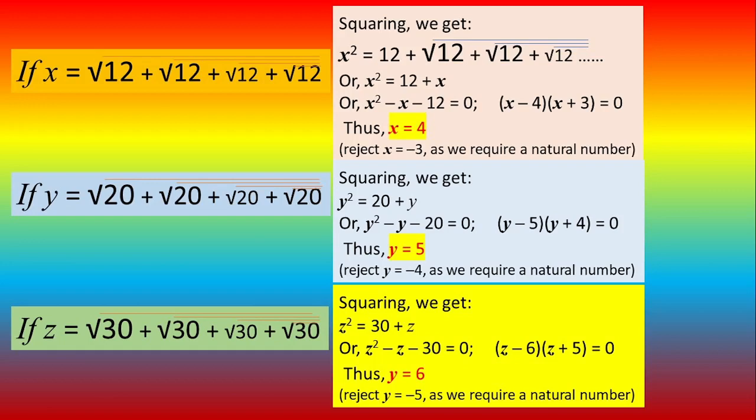So this is the trick for doing this sum. 12 broken into 3 into 4, the larger number 4 is taken if the sign is plus and the smaller number will be taken if the sign is minus. 20 is 4 into 5, we take the larger number because the sign is plus. 30 is 5 into 6, we take the larger number because the sign is plus. And then now we can easily add and find x plus y plus z.